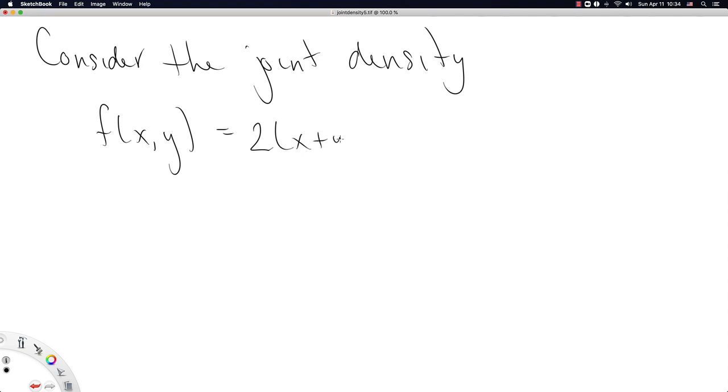Let's just try one last example. Consider the joint density f of xy equal to 2 times x plus y for 0 less than or equal to x less than or equal to y less than or equal to 1. The two things we need to check to make sure this is indeed a joint density is that it's a function of two arguments that returns a single number.